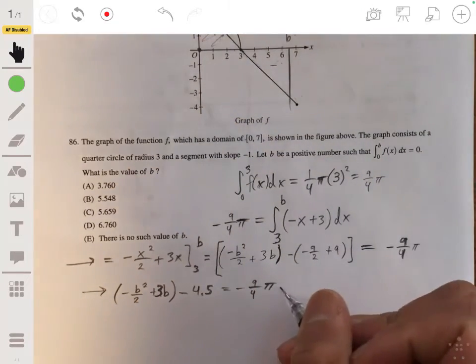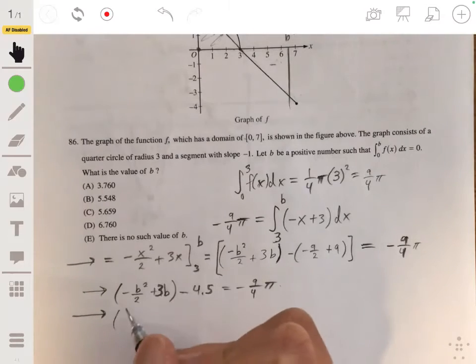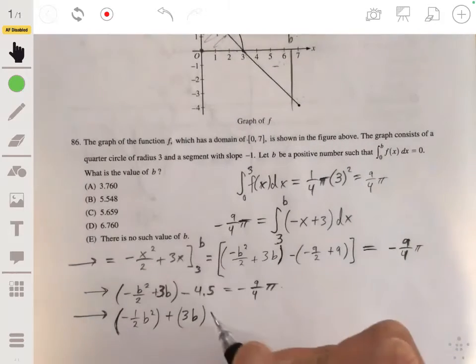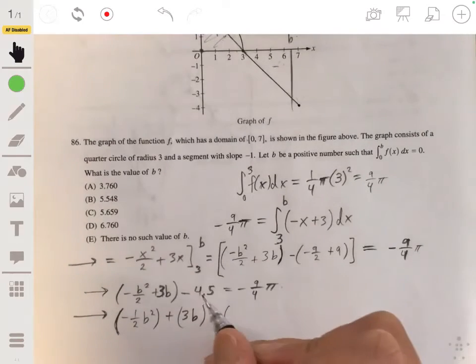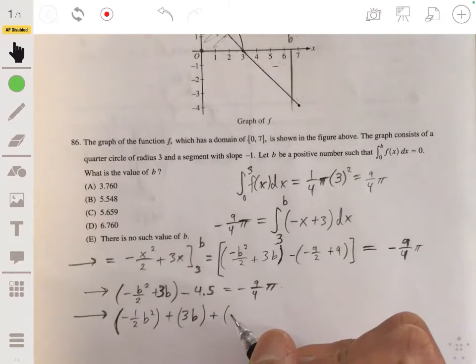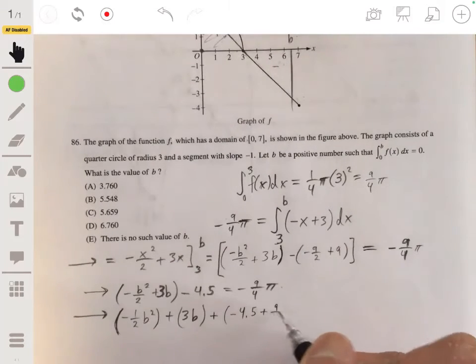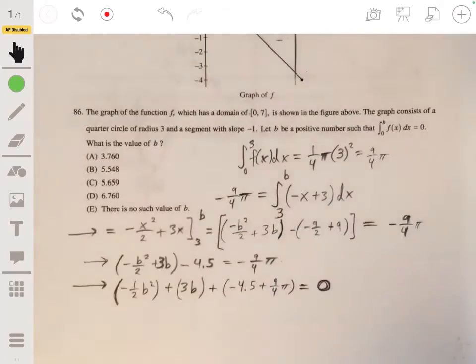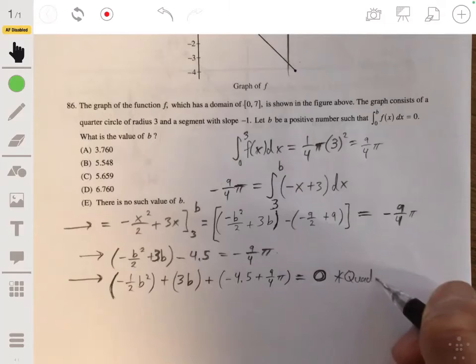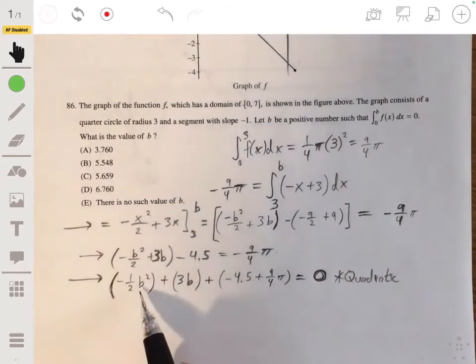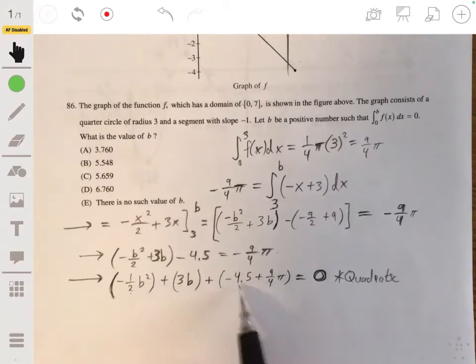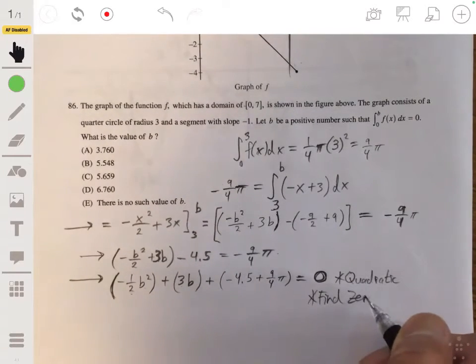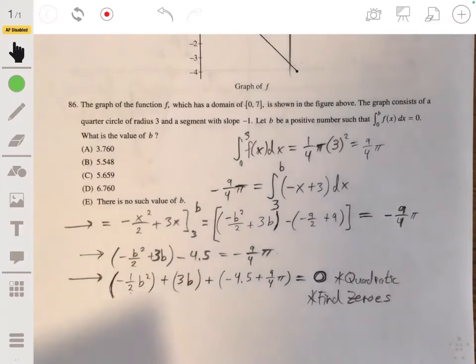And so what we're going to notice is that this is actually a quadratic equation. We have negative 1/2 b squared plus 3 times b. And this portion here, let's add this 9/4 pi to the left side, we would get negative 4.5 plus 9/4 pi. And that will be equal to 0. So this is actually a quadratic equation. So we can basically just graph this and solve for the zeros. We want to find the zeros of this quadratic.